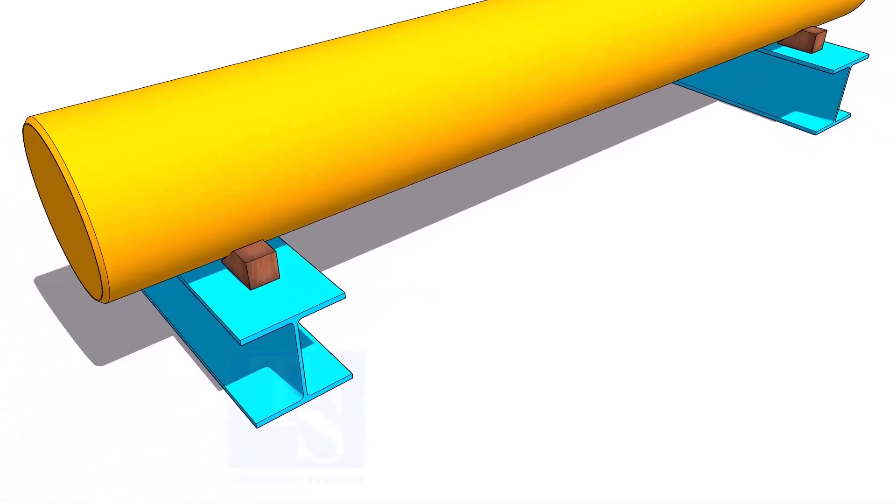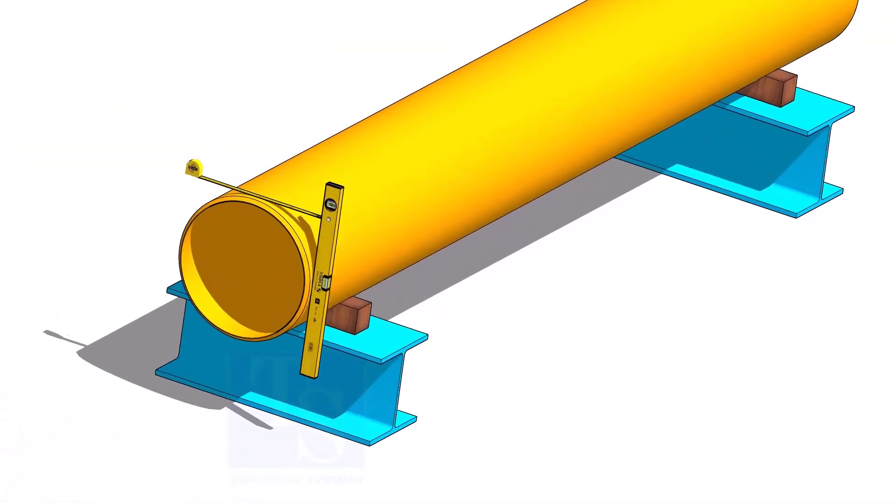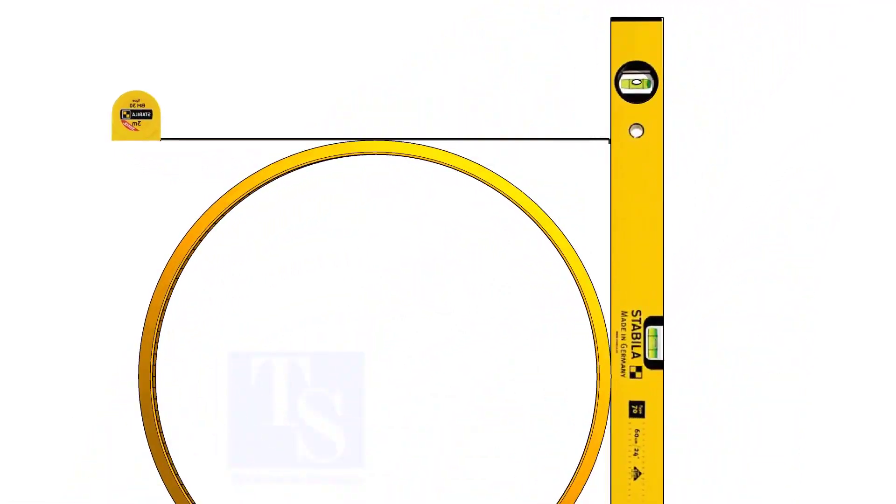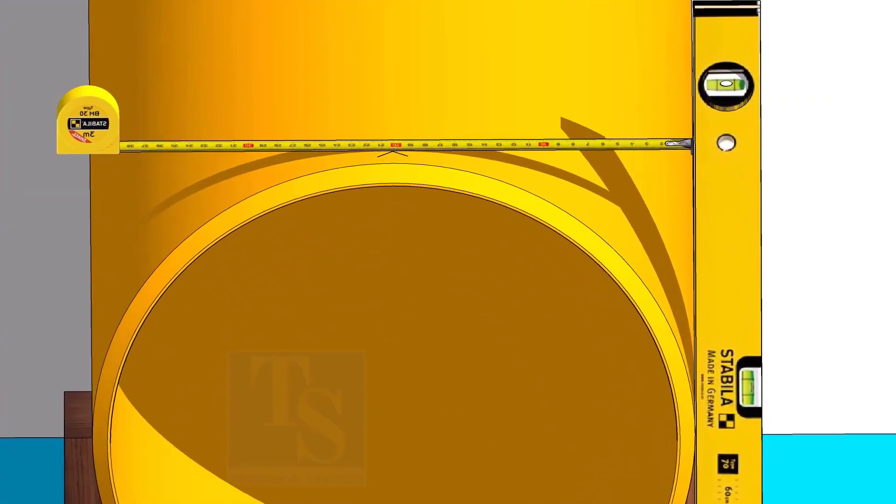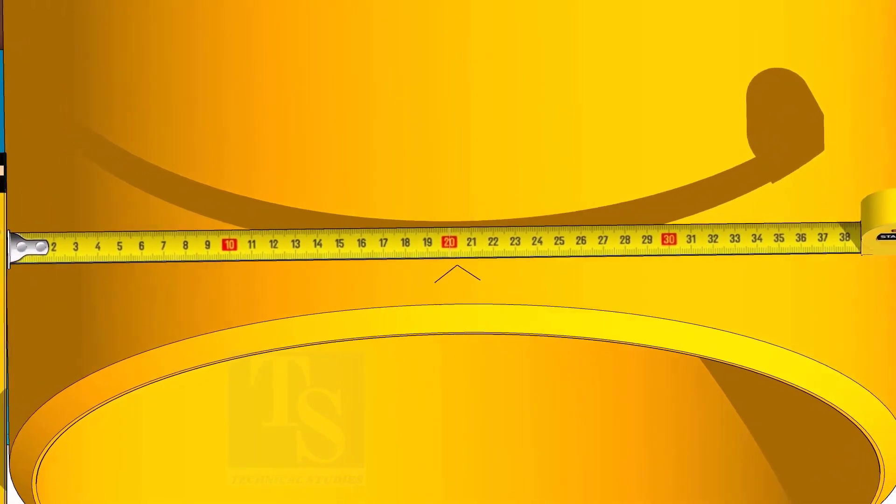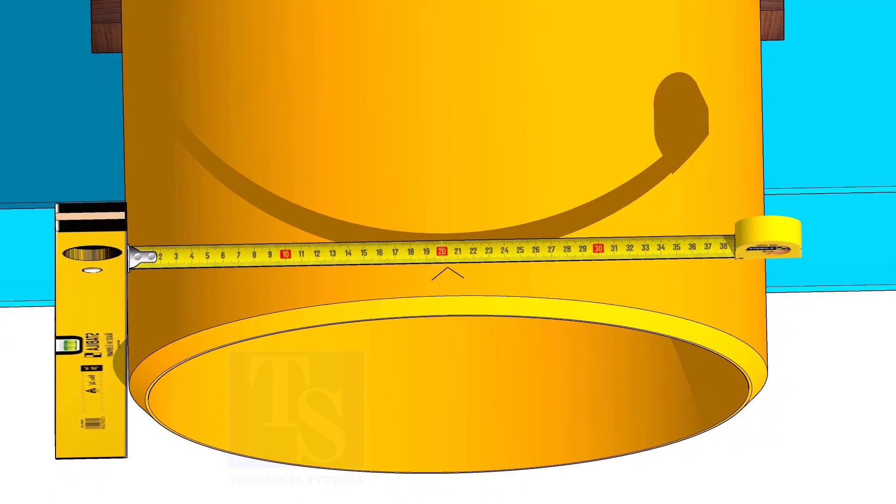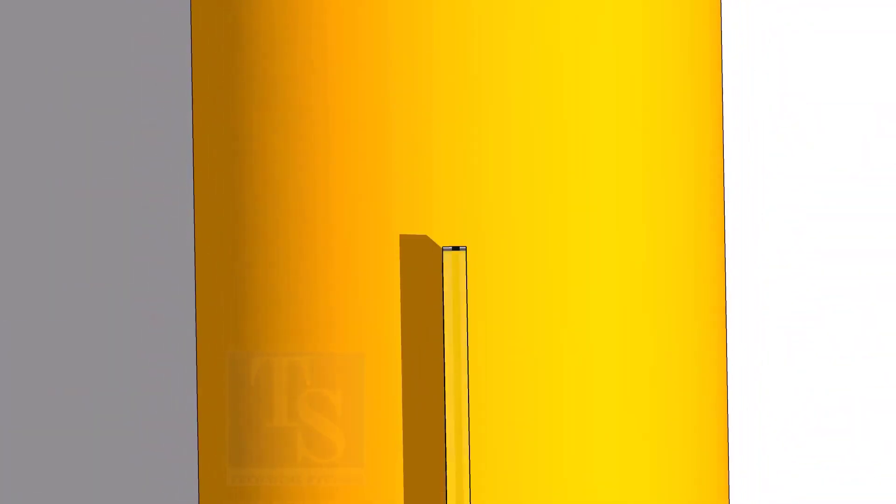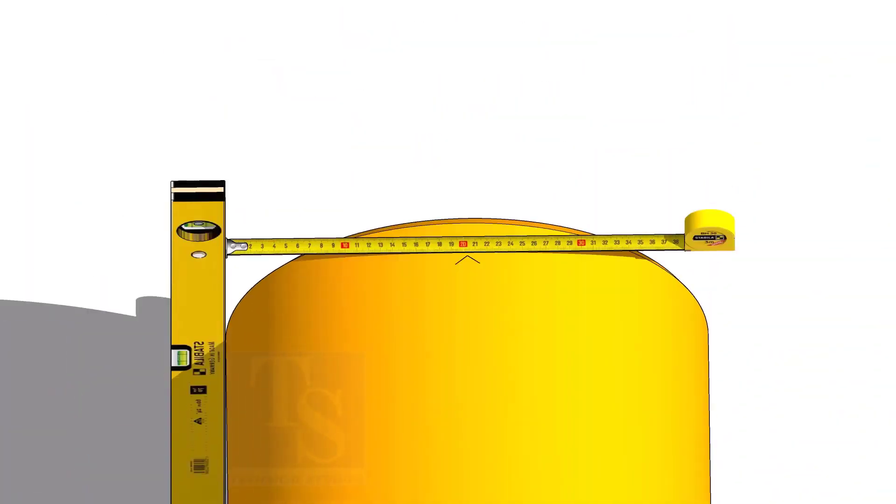After leveling the pipe, hold a level bottle vertically at the side of the pipe as shown. Mark the half OD on the top of the pipe and cross-check from the opposite side. Mark the center of the other end of the pipe and draw the center line.